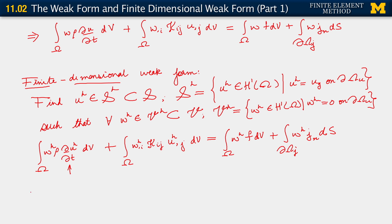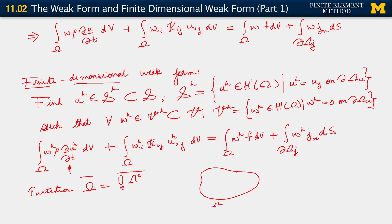As usual, we say: partition omega equals the union over e of each omega^e. Since we are in 3D, let us suppose that we are using our hexahedral element subdomains — and that is one of our elements, this is omega^e. All of that setup is the same as before.